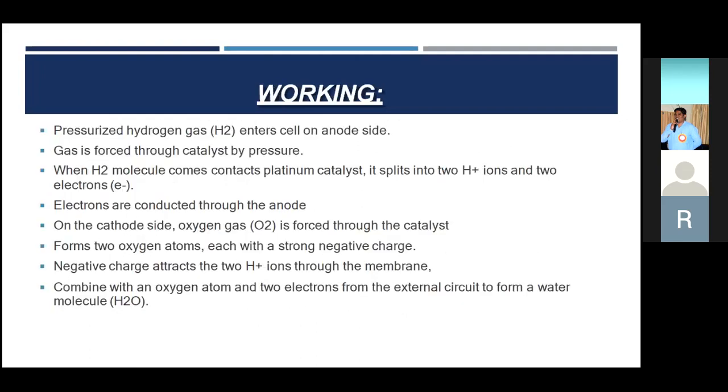Thank you. Good evening sir and all my dear friends, myself Tarun Kumar. I am going to talk about the working of H2/O2 fuel cells and the types of fuel cells. Pressurized hydrogen gas H2 enters the cell on the anode side. Gas is forced through catalyst by pressure. When H2 molecule comes in contact with platinum catalyst, it splits into two H+ ions and two electrons.